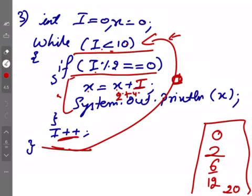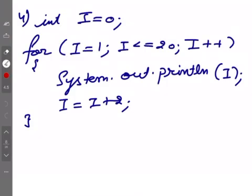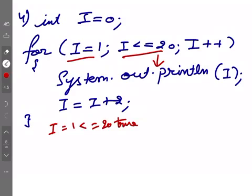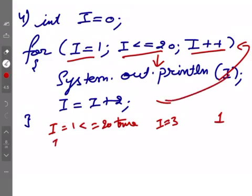Fourth question, I 0 hai yaha pe, initialize hua I 1 ho gaya, 1 less than equal to 20 is true. Thik hai, phir woh yehaan ajae ga, print kar diya I ko toh I abhi 1 tha, 1 print ho gaya. Phir hua I is equal to I plus 2 jis se I ki value 3 ho jayegi, phir woh upar aya idhar, yaha se aise ayae ga upar I plus plus se I change ho kar 4 ho jayegi. Condition check ho ghi, 4 less than equal to 20 yes it's true, print kar diya I ko toh screen pe 4 print ho gaya.